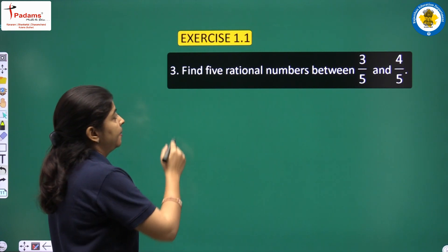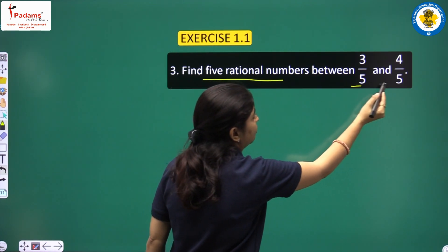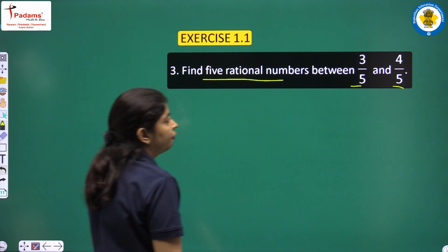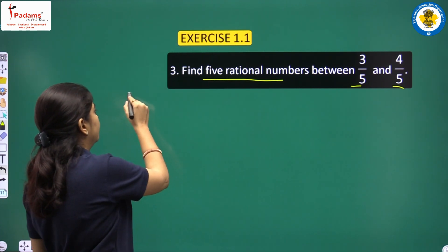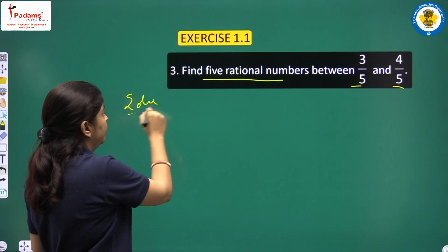Next question: Find 5 rational numbers between 3/5 and 4/5.